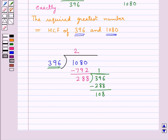We will keep repeating the process of dividing the preceding divisor by the remainder last obtained till we obtain remainder as 0.